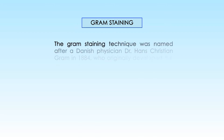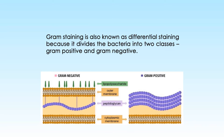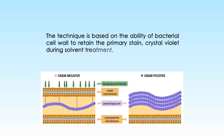Differential staining is so-called because it divides bacteria into separate groups based on their staining properties. The different types include gram staining. The gram staining technique was named after Danish physician Dr. Hans Christian Gram in the year 1884, who originally developed the technique. Gram staining divides bacteria into two classes: gram-positive and gram-negative. The technique is based on the ability of the bacterial cell wall to retain the primary stain crystal violet during solvent treatment.